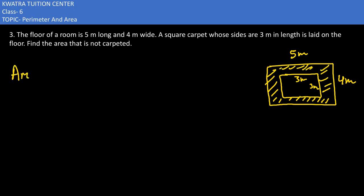Area that is not carpeted would be equivalent to area of the floor, the total floor. What do we need to minus? Area of carpet, minus.